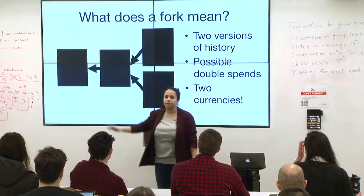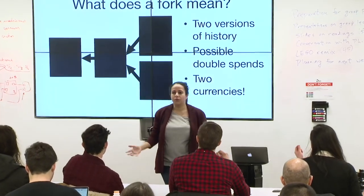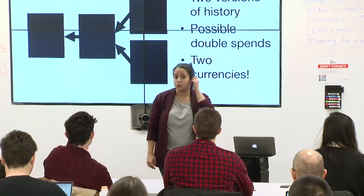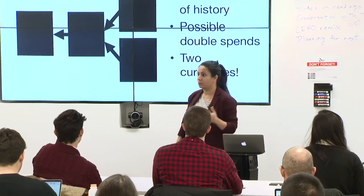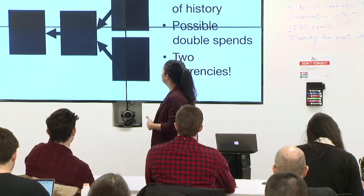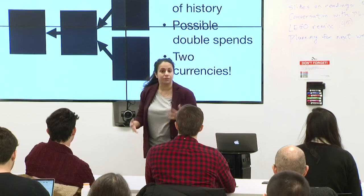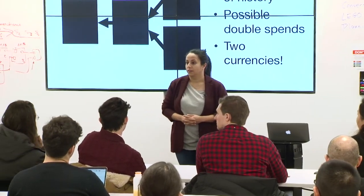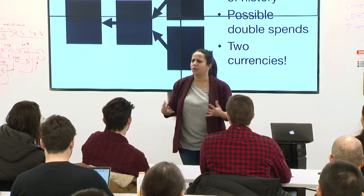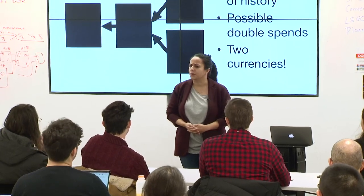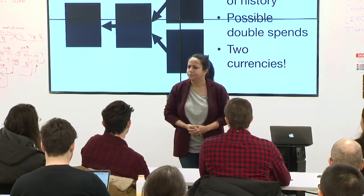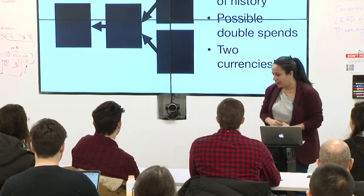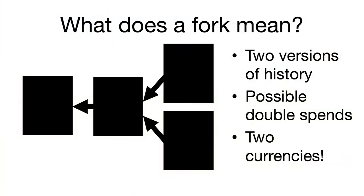If this is one blockchain and this is another, how is one supposed to distinguish between them? The one with the most work. That's a great way of thinking about it. What if they have similar amounts of proof of work? The one that's accepted by the majority of the network — or more specifically, the one that gets extended. So that's a really good way of looking at it.